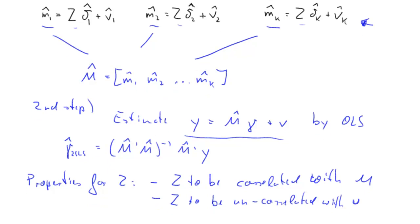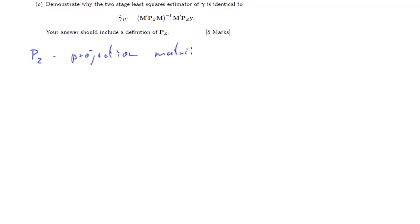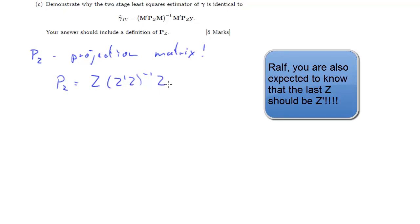Let's continue on to part C. Demonstrate why the two-stage least squares estimator of gamma, which we just derived, is identical to the IV estimator, which we have here. Your answer should also include the definition of P_Z. We know that P_Z is the projection matrix. And I expect you to know how a projection matrix is defined. So, let's start with that. The projection matrix of Z is Z times (Z'Z)^-1 times Z'.